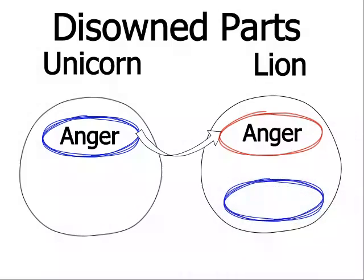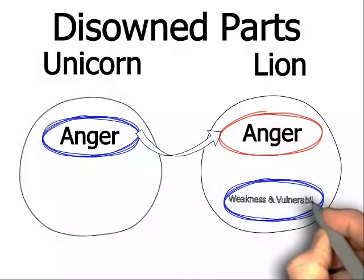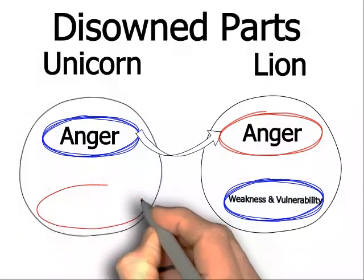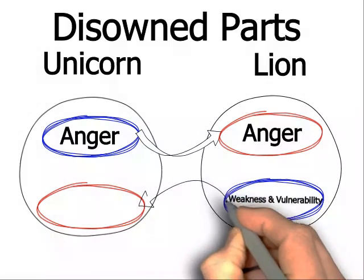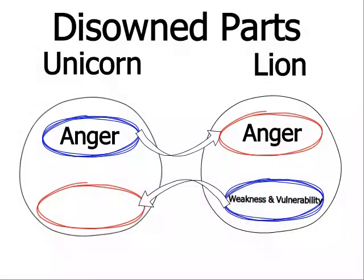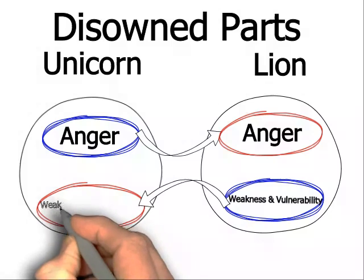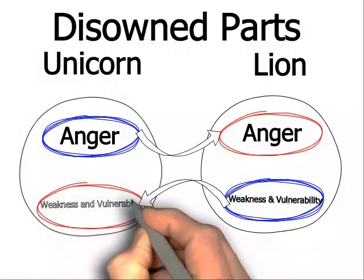What do lions disown? Lions disown their weakness and vulnerability. They never want to see themselves as weak and vulnerable. So they project that onto their unicorn partners, and then they attack them for being weak and vulnerable.